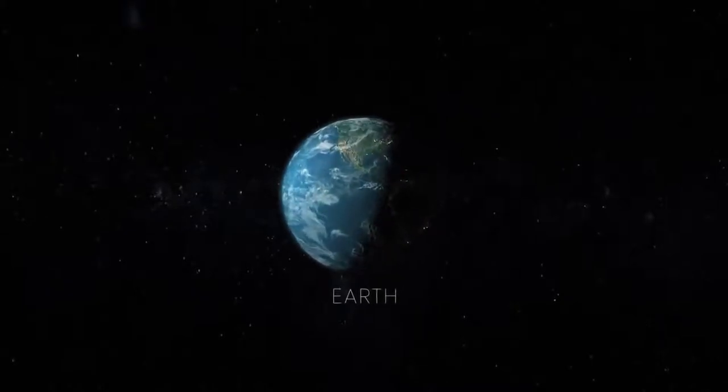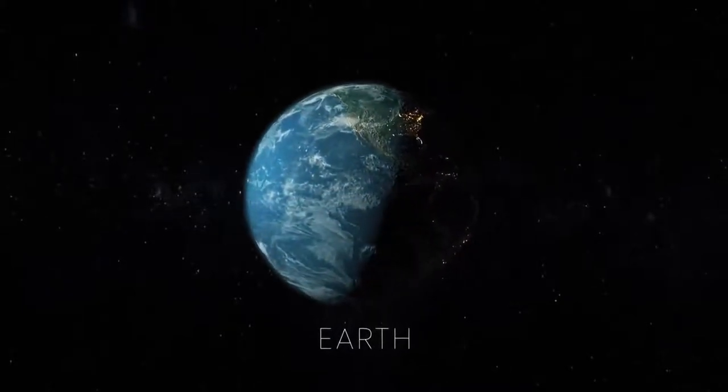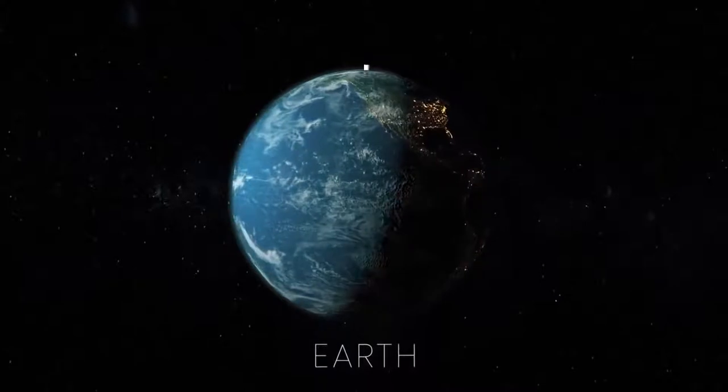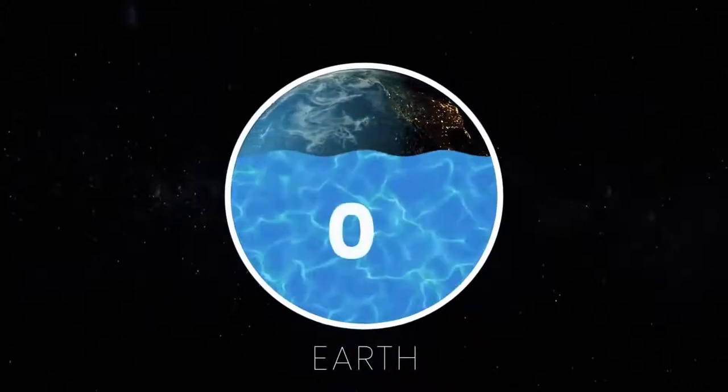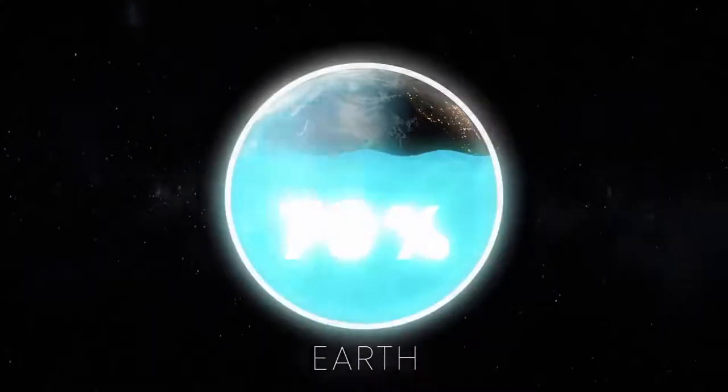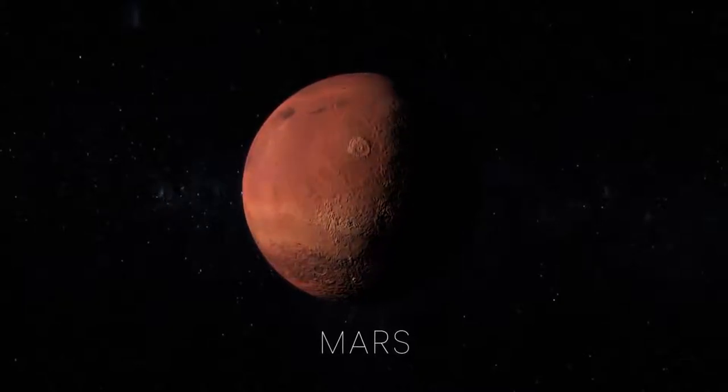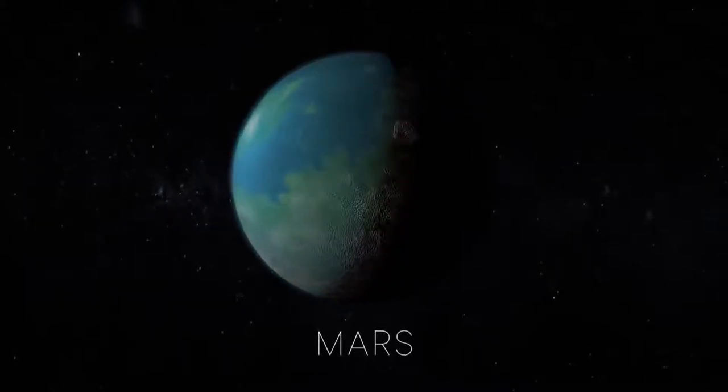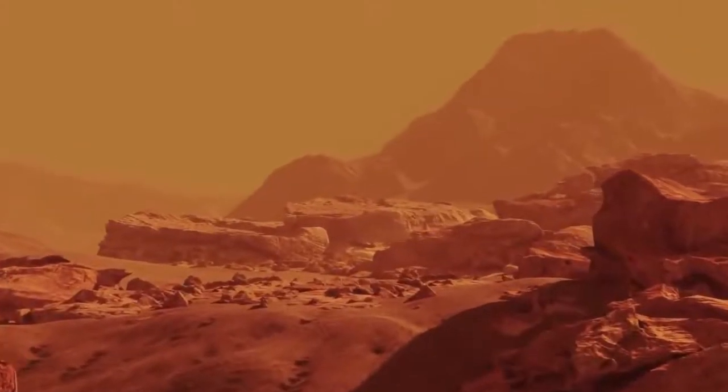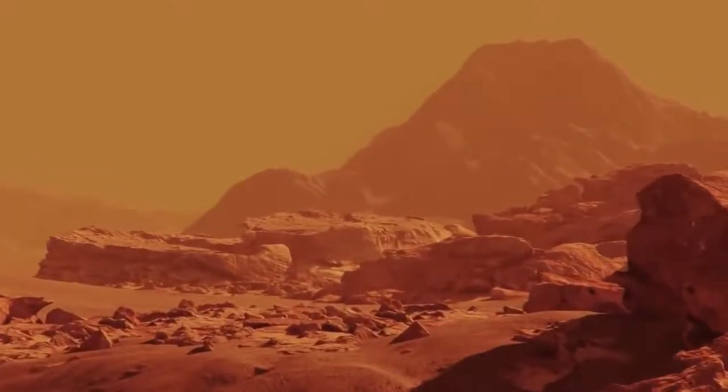Earth is the only planet we know of so far to have large bodies of liquid water on its surface, covering more than 70% of the planet. Other inner planets like Mars could have been wet early and evolved life before it became the harsh, barren world it is today.